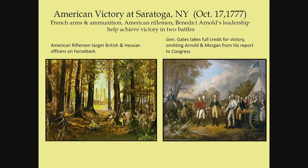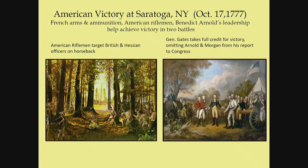Dean went to France and struck up a relationship with Pierre-Augustin Caron de Beaumarchais — from a watchmaking family but a playwright, who wrote The Marriage of Figaro, The Barber of Seville, and The Guilty Mother. He was also a close advisor to King Louis XVI and an arms dealer. Beaumarchais worked closely with Silas Dean over months to line up smuggled goods — arms, ammunition, tents, uniforms, and money — for this fledgling American army. But France did not commit troops; Louis XVI was still rebuilding his army and navy destroyed during the Seven Years' War.